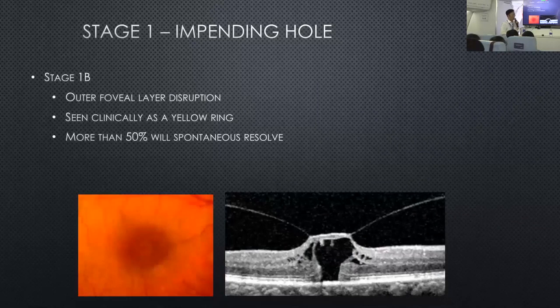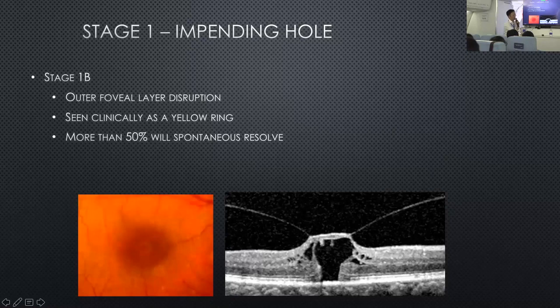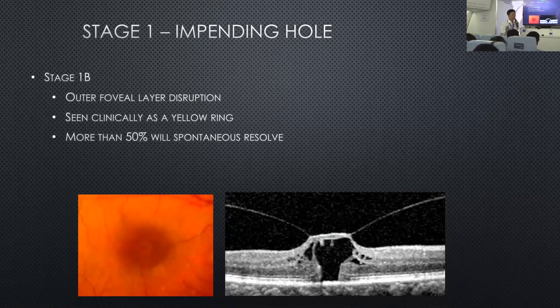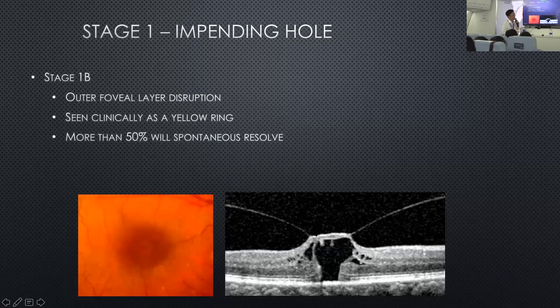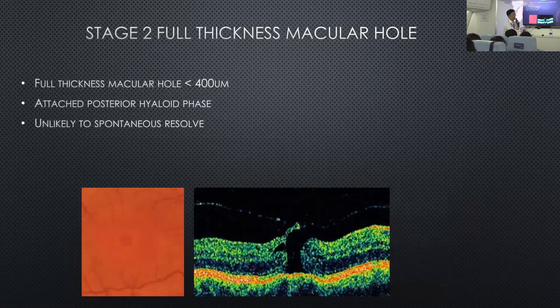Stage 1B is when the traction is more severe and you get more cystic separations, though there is still no hole — you can see the top is still intact. However, if this keeps pulling more, you can get a full thickness macular hole — either stage 2 or stage 3.